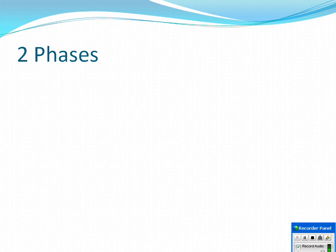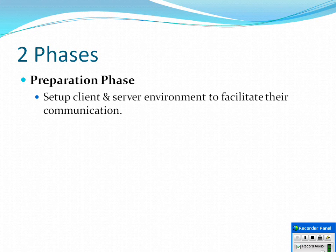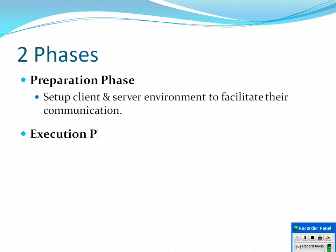There are two phases for developing web services. The first phase is the preparation phase and the second phase is the execution phase. In the preparation phase, the WSDL document is common between the producer application and the consumer application. The consumer generates client-side networking code, and the producer generates its networking code. The client-side code we call a stub, and the producer-side code we call a skeleton.